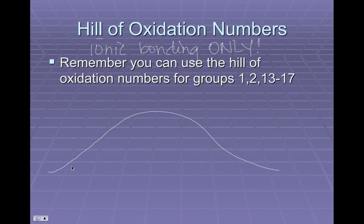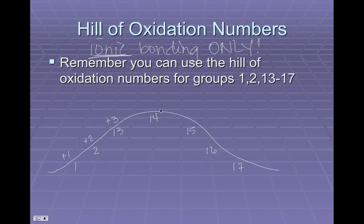You put the group numbers on the bottom, and this only works for the S and P block elements. So you've got group 1, group 2, group 13 — going up the hill. The oxidation numbers, the charges these elements make when in an ionic compound — remember, ionic bonds only — for group 1 is +1, group 2 is +2, and group 13 is +3.